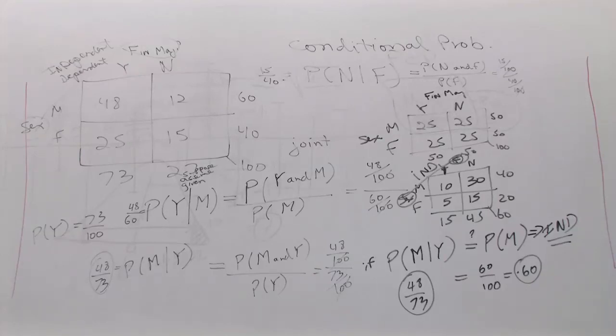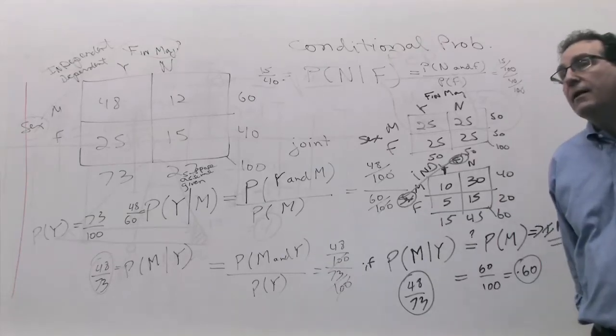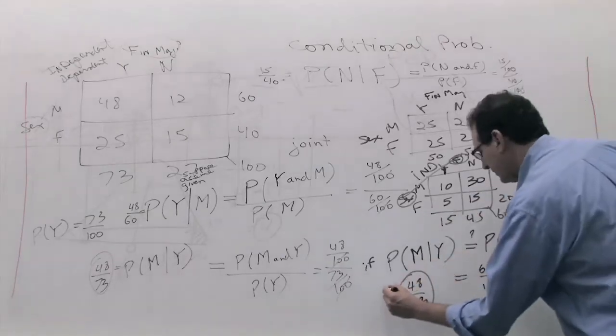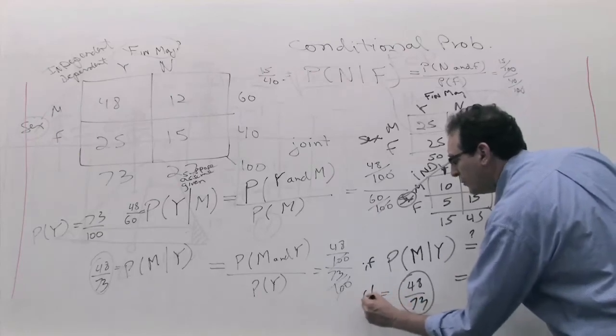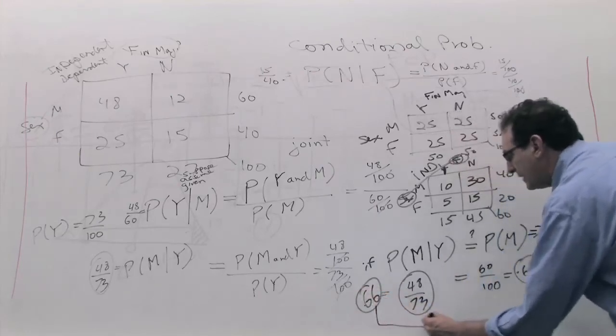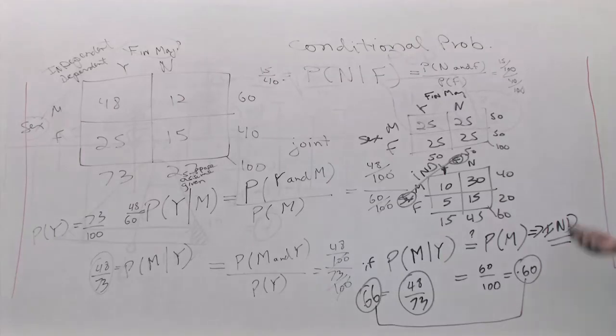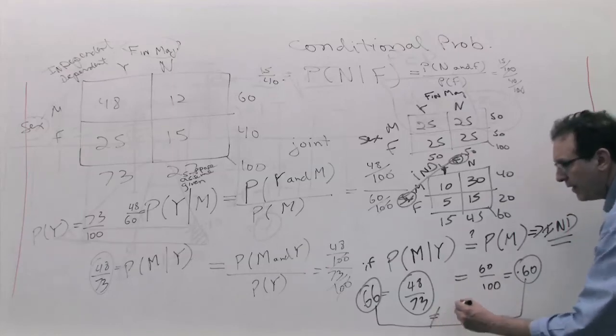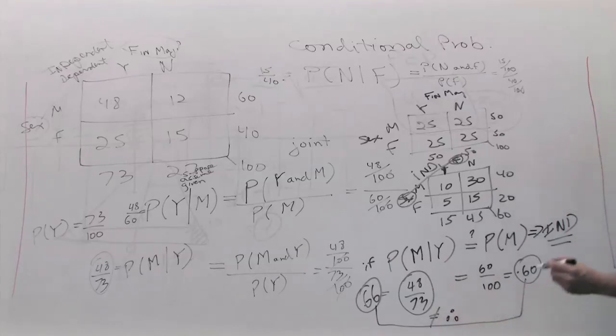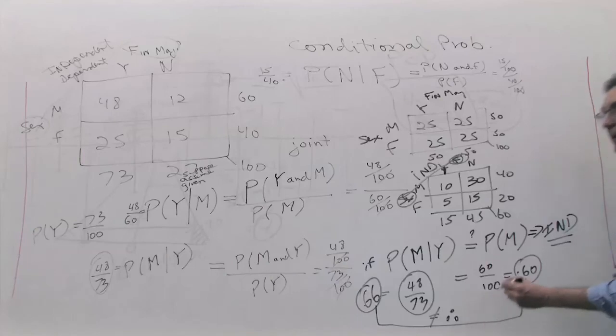You're not going to make me take out a calculator, are you? Somebody should do that, please. Yes. 48 divided by 73 is? Say again. 0.658. So, it's 0.66. Yes. 0.66 when you round it to two places. And is 66 the same as 60? It's close, which means in stat 2, they may be considered independent, but in stat 1, they're not the same, so therefore, they're not equal.